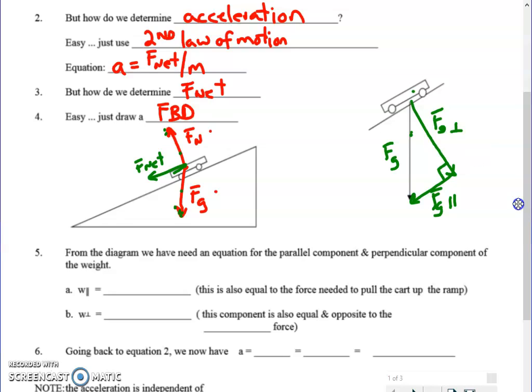So again let me reiterate, the weight which is pulling straight down this way can be thought of, because the ramp is tilted, as distributed differently. Some of the weight is pushing into the ramp. In other words if I were the ramp or the car was sitting on me I'd feel it pushing into me perpendicular and the rest of the weight is parallel.